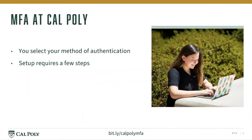You can select the authentication method that's right for you and change it at any time. Authentication methods include a push notification through an app on your smartphone or tablet, a phone call to a smartphone or landline, a passcode sent to your mobile device, a passcode sent to a security token which can be checked out from the ITS Service Desk, Touch ID on computers that have that function, or a security key that you can purchase.